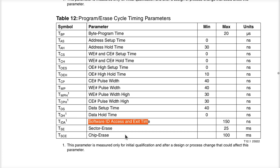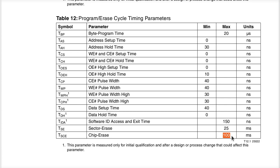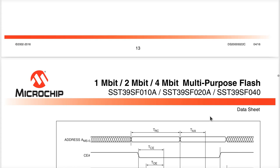The timing values — like 150 nanoseconds to access the software ID, or 100 milliseconds to erase the chip — represent how long the chip takes to do something, not limits on our control. I put sleep commands in the program to wait after triggering an erase. This is the time the chip takes, not a constraint on our programmer, and that's super important. We're free to do anything we want as long as we wait for the chip using those numbers.